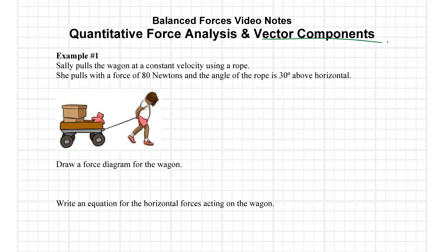The first example is Sally and she looks a little sad here. She pulls the wagon at a constant velocity using a rope and she pulls with a force of 80 newtons and the angle of the rope is 30 degrees above the horizontal. So what am I dealing with here? I'm gonna draw all the forces on the wagon. So I'm gonna put that around there just to isolate what I'm talking about. I'm gonna consider that wagon acts like a single dot. So there's the wagon.